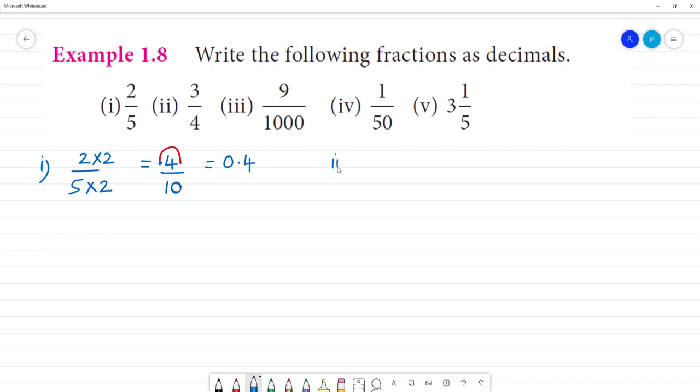Second one. 3 by 4. 4 into 25 is 100. 3 into 25 is 75 by 100. Point decimal, 2 digits: 1, 2. 0.75. Clear?